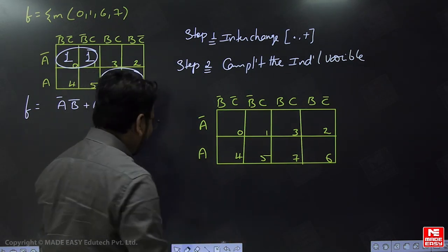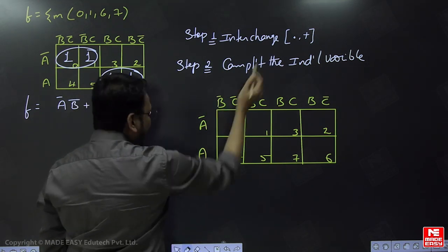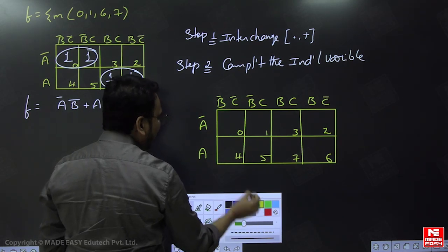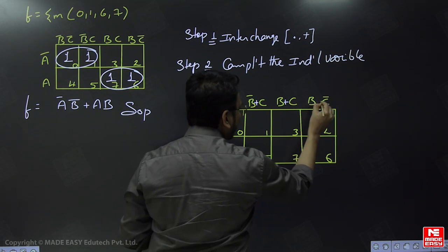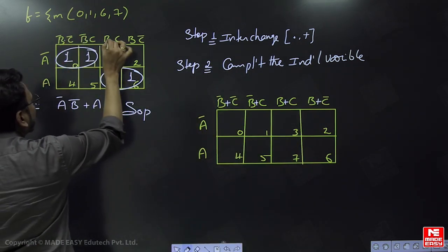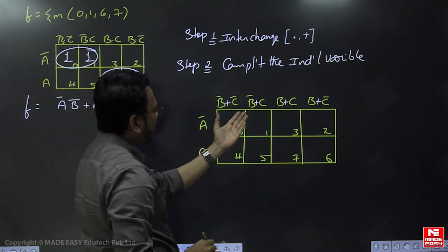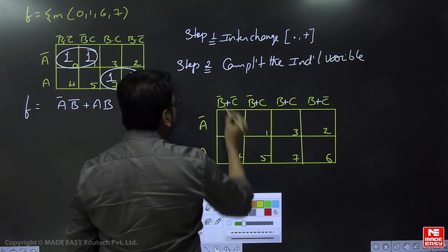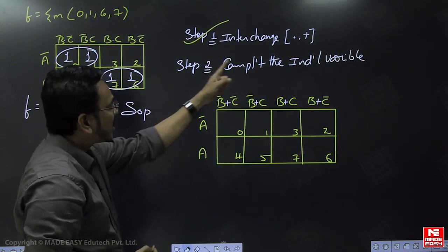Now see carefully how the changes are applied. Step one: interchange the operator. So wherever we had the dot operator, I am going to replace it with plus — here plus, here plus, here plus, here plus. The dot operator is replaced with plus everywhere. Step one — interchange the operator — is now complete.